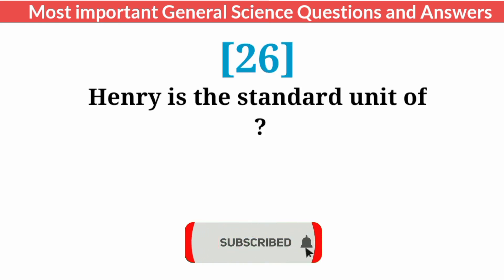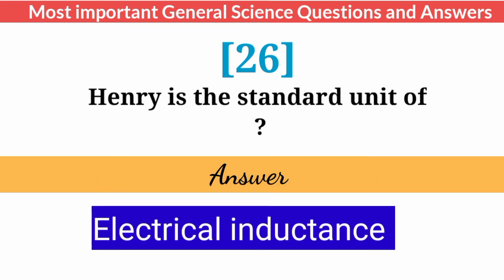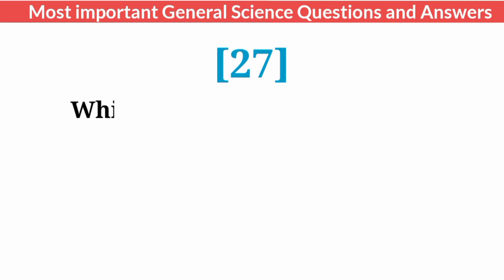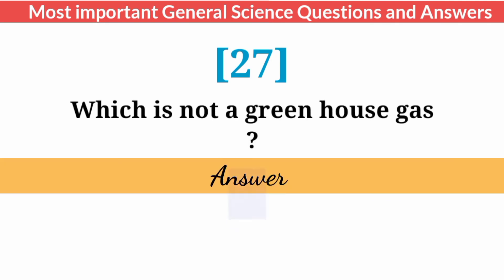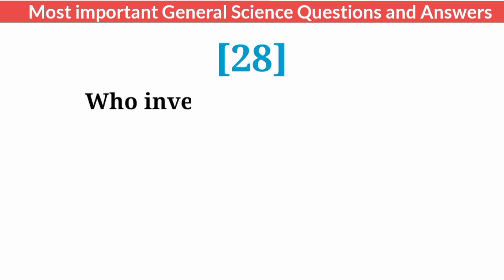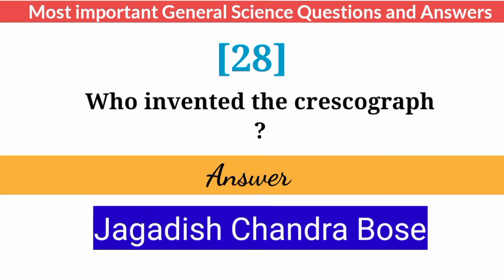Henry is the standard unit of? Answer: Electrical inductance. Which is not a greenhouse gas? Answer: Argon. Who invented the crescograph? Answer: Jagadish Chandra Bose.